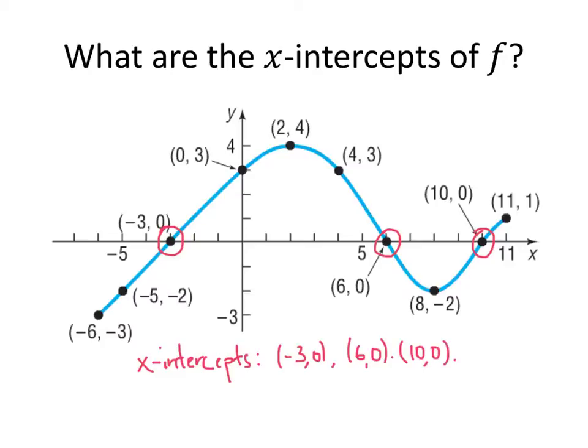But since we're talking about x-intercepts, we know that the y-coordinates of each of those points is going to be 0. These are points where we're crossing the x-axis, and on the x-axis, the y-coordinate is always 0. So a shorthand for this is we might just say that the x-intercepts are those x-coordinates, -3, 6, and 10. So either one of these is a fine way to answer this question.